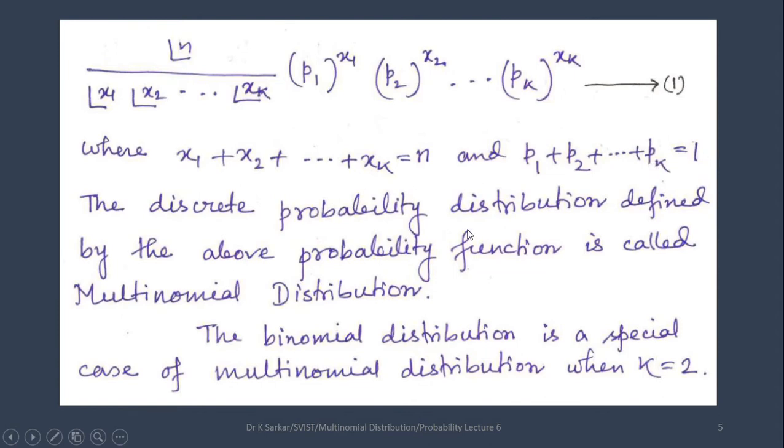where x1 plus x2 plus up to xk equals n and p1 plus p2 plus up to pk equals 1. The discrete probability distribution defined by the above probability function is called multinomial distribution. The binomial distribution is a special case of multinomial distribution when k equals 2. In the next lecture, I will discuss binomial distribution.